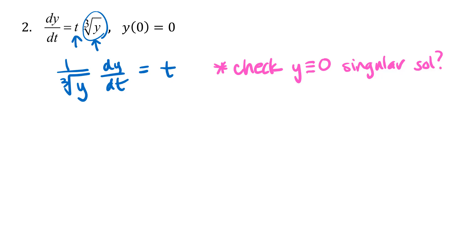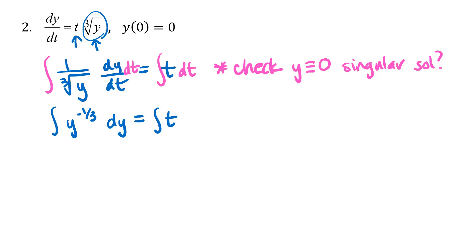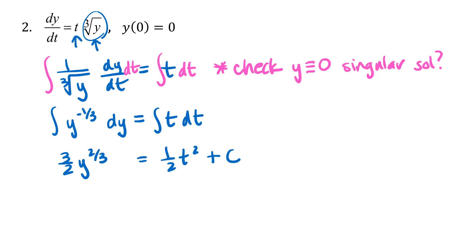Let's go ahead and solve this differential equation by integrating both sides with respect to t. On the left side, recall that dy/dt times dt simplifies to dy — they don't exactly cancel but they simplify. So on the left side I use the basic power rule and get three-halves times y to the two-thirds, and on the right side one-half t squared plus c.